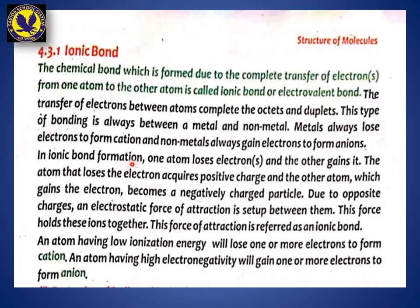This type of bonding is always between a metal and a non-metal. Metals always lose electrons to form cations, and non-metals always gain electrons to form anions. When a metal gives away its extra electron, it becomes positively charged and forms a cation. The non-metal gains the electron and becomes negatively charged, because electrons carry a negative charge, while the protons in the nucleus carry a positive charge.